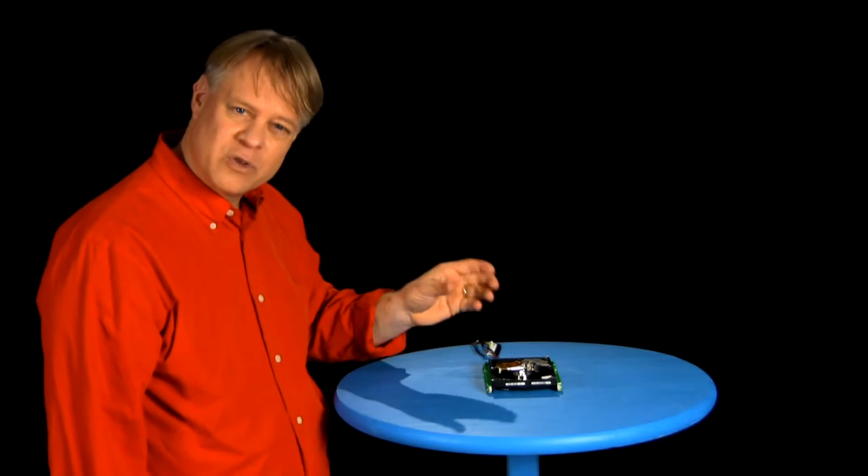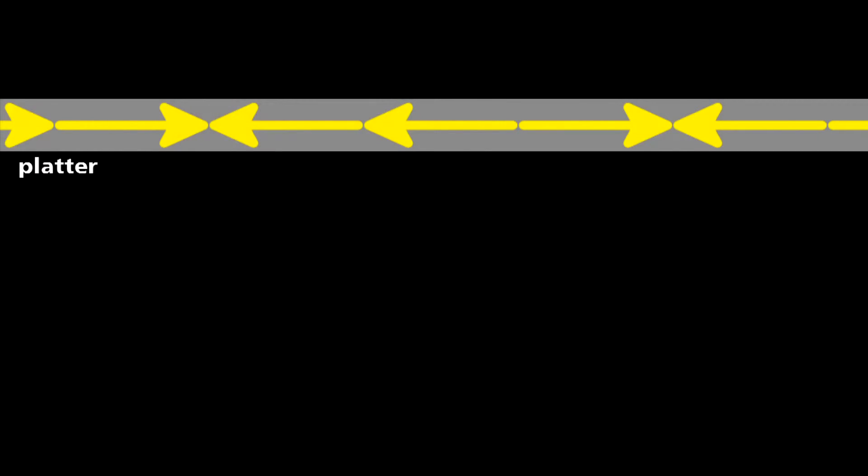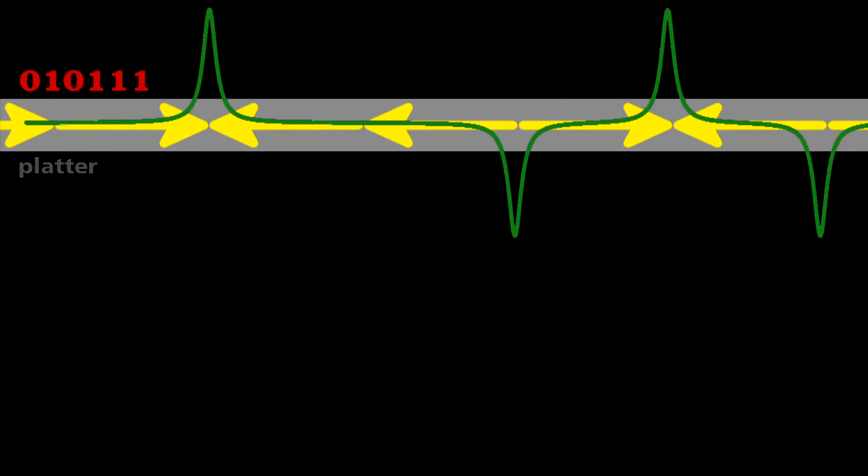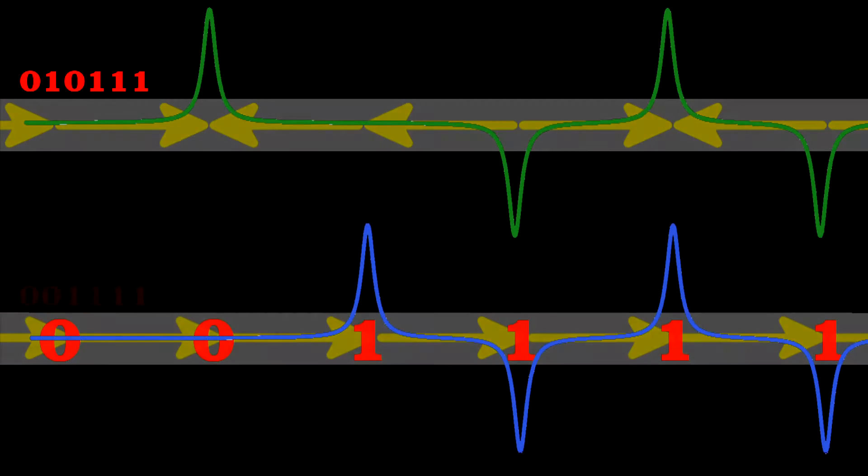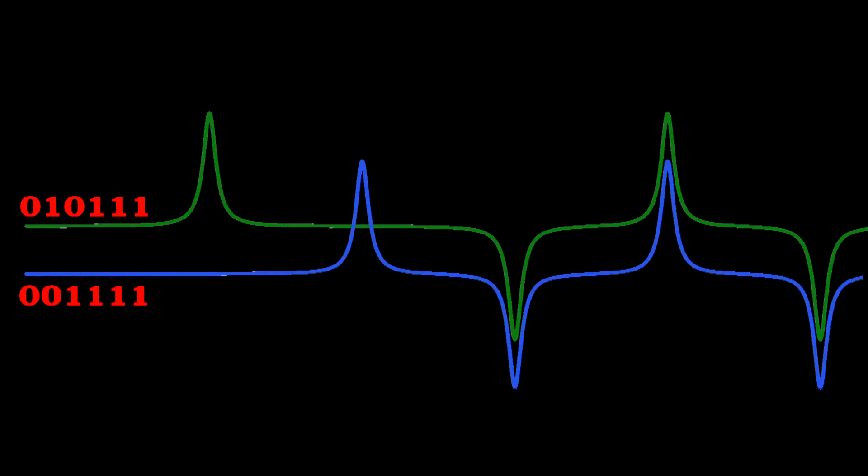One last thing that I find enormously clever, using a bit of math to squeeze up to 40% more information on the disk. Consider this sequence of magnetic poles on the disk surface, 010111. A scan by the head would reveal these distinct voltage spikes, both positive or negative for the ones. We would be easily able to distinguish it from, say, this similar sequence. If we compare them, they clearly differ.